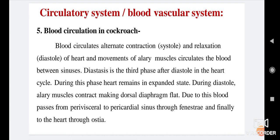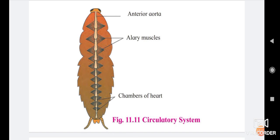Blood circulation in cockroach: how does blood circulate in the cockroach body? Blood circulates by alternate contraction (systole) and relaxation (diastole) of the heart. Movement of alary muscles circulates the blood between sinuses. Diastasis is the third phase after diastole in the heart cycle.